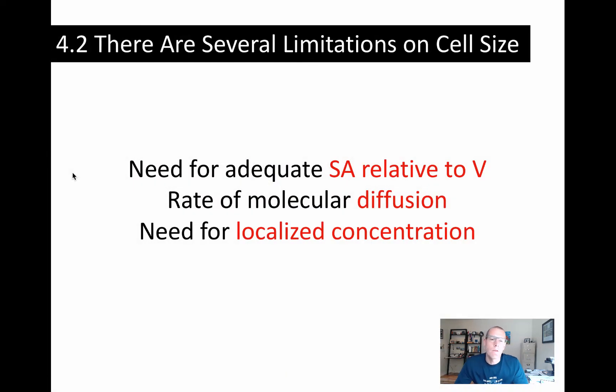So there are three reasons that we can explore regarding the limitations on cell size. Before we do that, let's just think about cells. Cells come in a variety of sizes and shapes. You see these characteristic cells drawn in textbooks, and it's a little bit misleading. You think cells all have the same kind of anatomy and morphology.